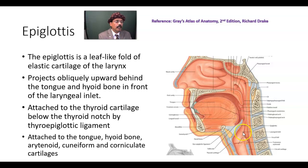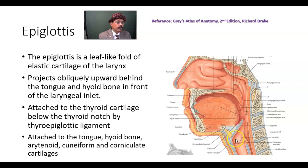Posteriorly, it is connected to the arytenoid cartilage by the aryepiglottic fold, containing corniculate and cuneiform cartilages, by means of a membrane. The quadrangular membrane is continuous with that of the vestibular fold.